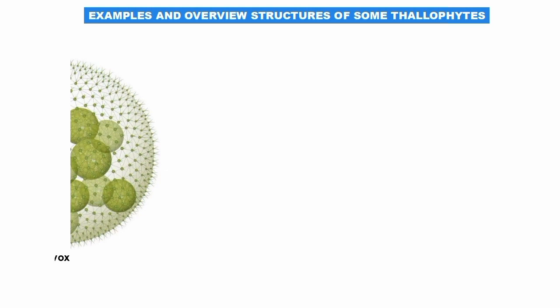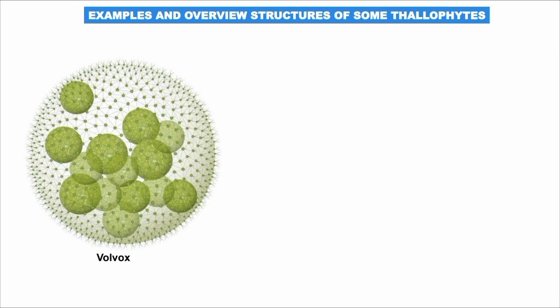Another tiny green alga is called Volvox, which consists of a ball of identical cells, each bearing flagella. The coordinated beating of the flagella brings about the movement of Volvox. These are the basic structures of the green algae Spirogyra and Volvox.